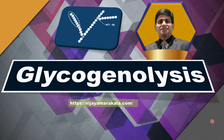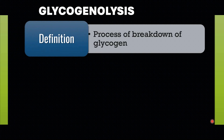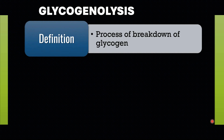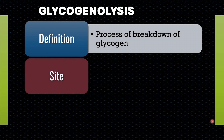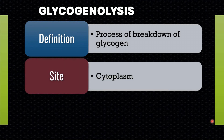Hello everyone, today we are going to study about Glycogenolysis. Glycogenolysis means breakdown of glycogen to glucose-6-phosphate or glucose in the cytoplasm of the cell. You should remember Glycogenolysis is not just a reversal of Glycogenesis, because there are separate groups of enzymes present in the cytoplasm for Glycogenesis and Glycogenolysis.